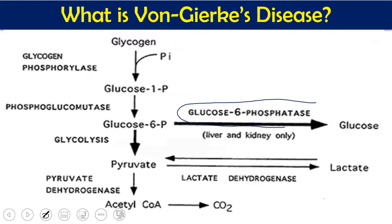This enzyme we don't have. The significance of glucose-6-phosphatase is in the degradation of glycogen for glucose production. The first important enzyme for glycogen degradation is glycogen phosphorylase, which gives us glucose-1-phosphate. There are also two important enzymes: glycogen phosphorylase and debranching enzyme. Glycogen gives us glucose-1-phosphate, which is then converted to glucose-6-phosphate by phosphoglucomutase.